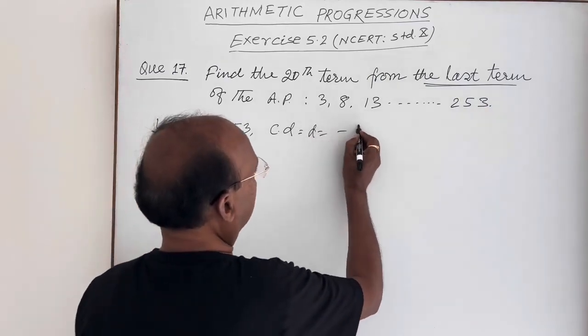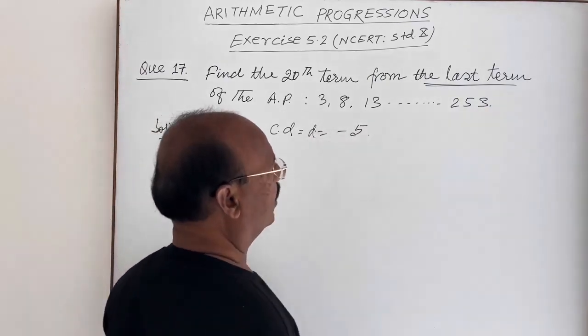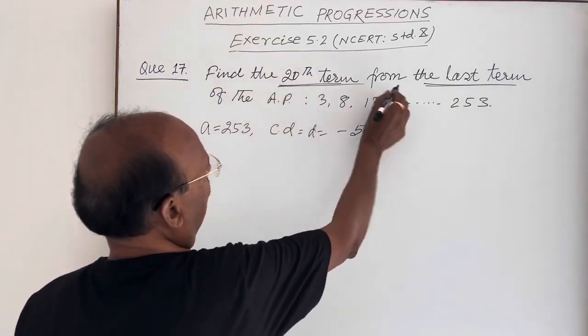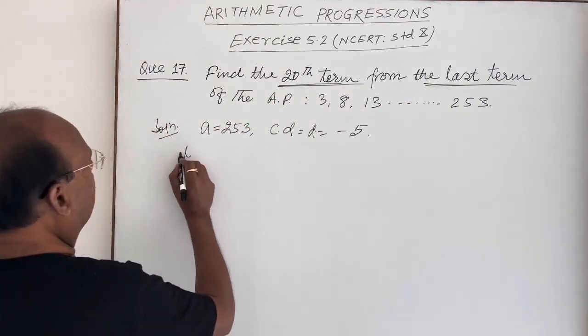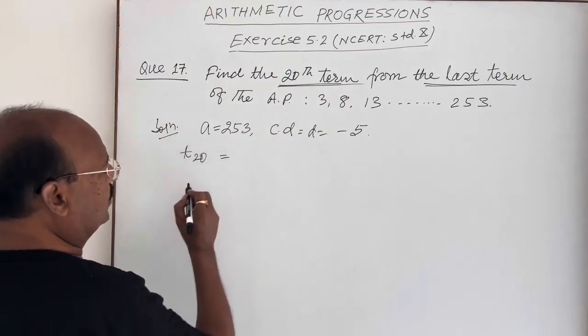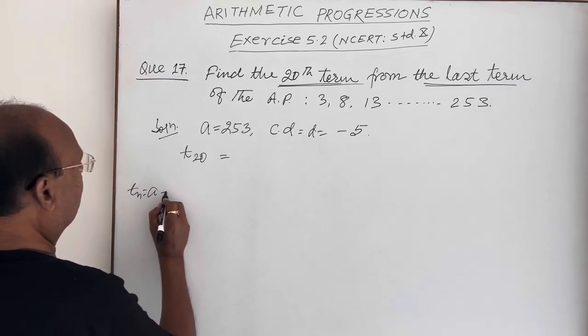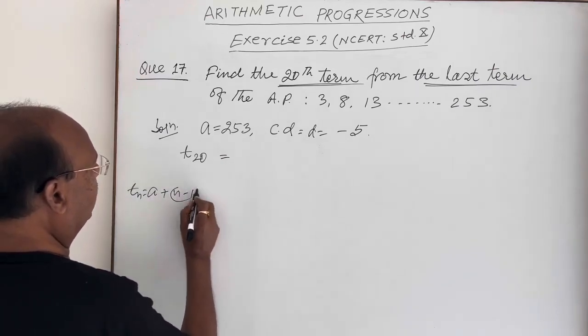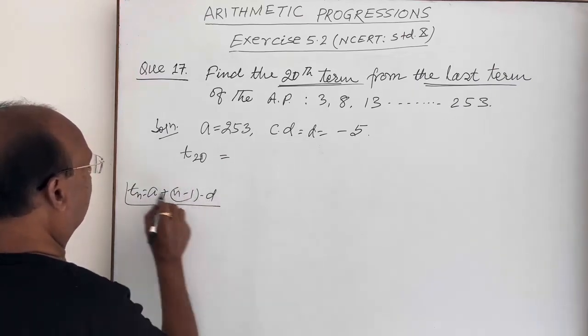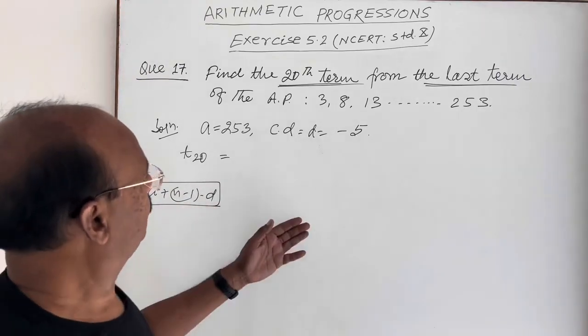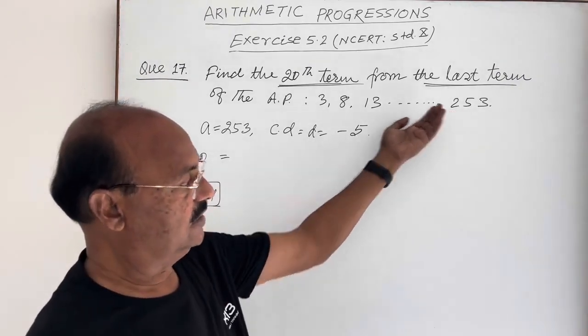From the last we have to find the 20th term, so T20. Here we will use the formula TN equals A plus (N minus 1) times D. With the help of this formula we find out the Nth term.